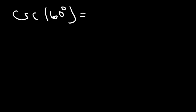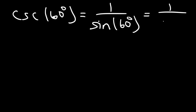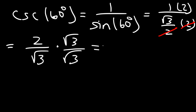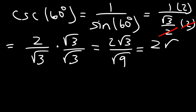What about cosecant of 60? Cosecant is the reciprocal of sine, and sine 60 is the square root of 3 over 2. Multiply top and bottom by 2 — the 2s cancel — leaving 2 divided by the square root of 3. Then multiply top and bottom by root 3: square root of 9 is 3, so cosecant of 60 is 2 root 3 over 3.